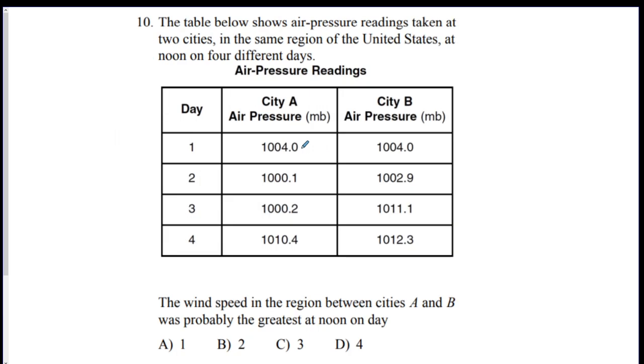And the last one. So they got city A pressures over the course of four days, city B pressures over the course of four days. The wind speed in the region between A and B was probably greatest on which day? You want the one where they're the biggest difference. So the ones with the biggest difference is going to be, it looks like, this one's like about 2 millibars difference. This one's about 11. This one's about 3. And this one's about 0. So day three, since you have your biggest difference, you will have your fastest winds. All right?